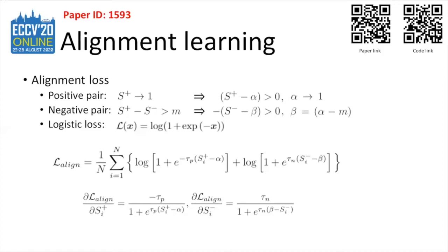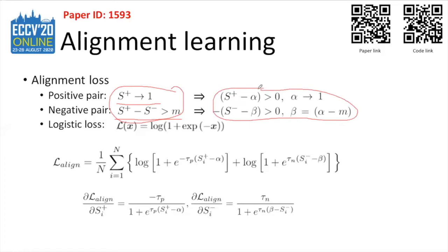Mathematically, we formulate our learning objective as a contrastive learning task, for which we propose an alignment loss as well as a novel sampling method to enrich the searching space. In our learning schema, the cosine similarity of a positive pair is encouraged to be as large as possible, while for a negative pair we optimize the deviation between negative and positive similarity to be larger than a preset margin. These criteria are formulated and further derived using logistic loss as our basic objective function, and the partial derivatives show that our loss function can automatically assign larger weights to more informative samples.